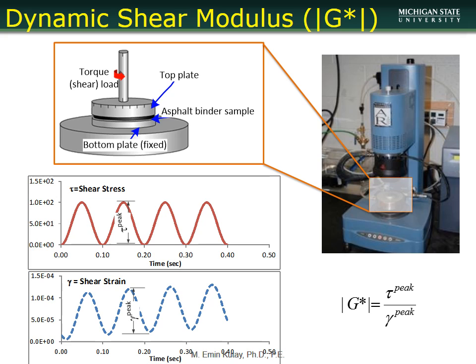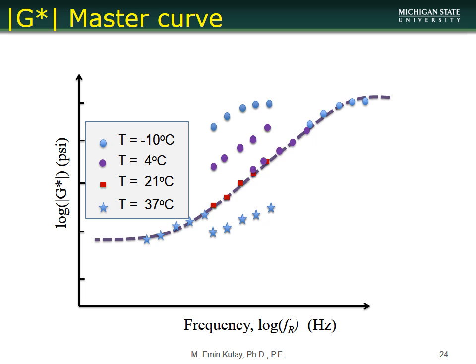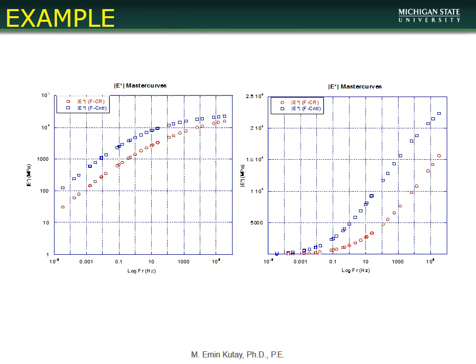This presentation is targeted for introductory graduate students just out of undergrad learning about asphalt mixture behavior for the first time. Just like for mixtures, we can construct a dynamic shear modulus master curve for binders. As an example, we tested two different mixtures with the same mix design — the only difference was a special additive — and found very large differences in dynamic modulus.